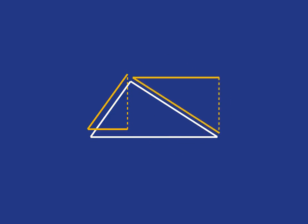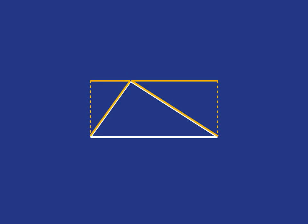And what we can then do is rearrange those two pieces like this, and so they fit nicely together with the original triangle to make a rectangle.